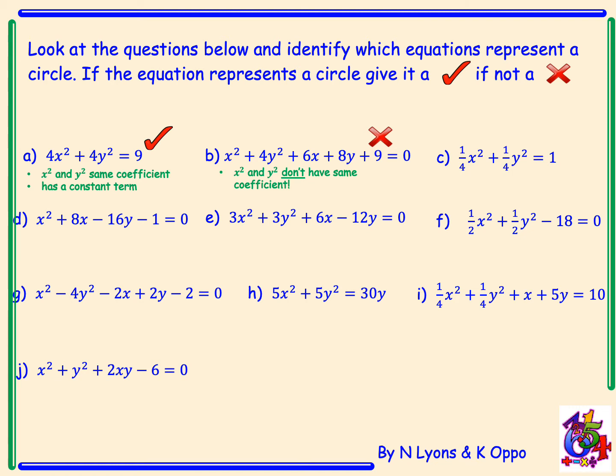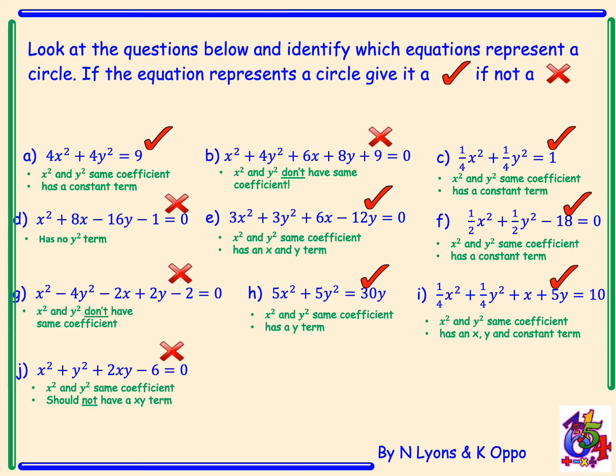Can you pause the video and try the remaining questions on your own? The answers for c: same coefficient and a constant term, so it is a circle. For d: it has no y squared term, so it's definitely not a circle. The remaining answers — e is a circle, f is a circle, g is not, h is a circle, i is a circle, and j is not a circle.